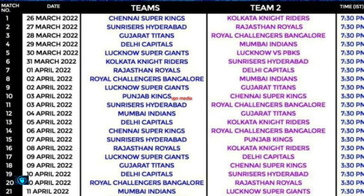April 1st: Rajasthan Royals vs Delhi Capitals. April 2nd: Royal Challengers Bengaluru vs Mumbai Indians. April 2nd another match: Lucknow Super Giants vs Gujarat Titans. April 3rd: Punjab Kings vs Chennai Super Kings. April 3rd another match: Royal Challengers Bengaluru vs Sunrisers Hyderabad. April 4th: Mumbai Indians vs Gujarat Titans.